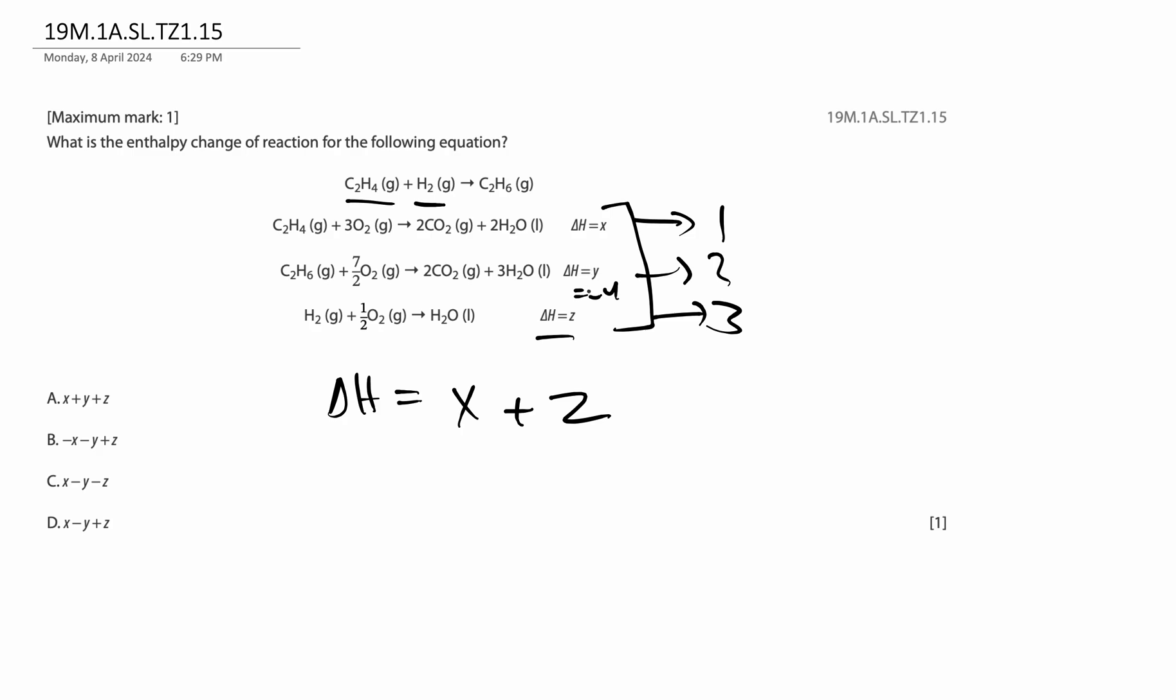The coefficients are all proper. So x plus z minus y, because I need to add up all three of these enthalpy changes. So which of these are the correct answer? They want it in the order of x, y, z. So it's x minus y plus z. Which gives us our answer: x minus y plus z.